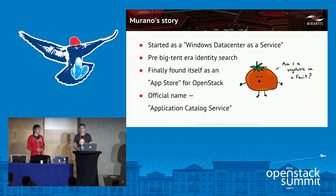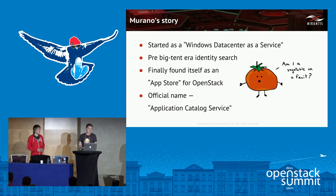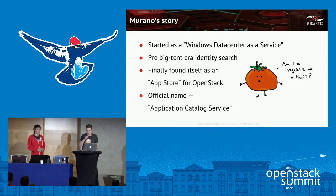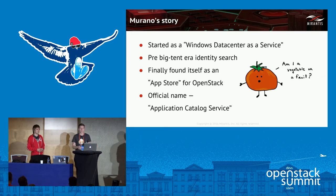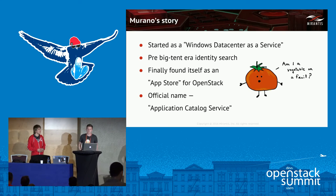At that time, we couldn't call ourselves something like an app orchestrator or pretty much any orchestrator, because there was Heat, and that would mean unnecessary competition. Hence there was some identity search. Murano tried to find what it was. And while we were looking for our identity, we were building more and more apps — more and more complex and big — and at some point they were numerous enough that we could finally say we should be the app store of OpenStack.